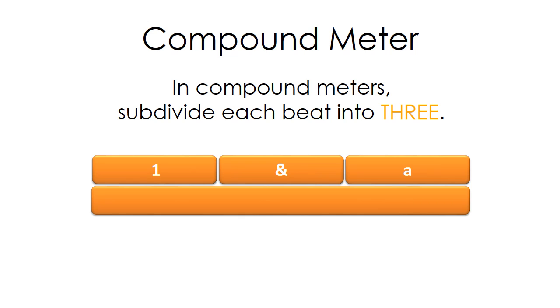When counting compound meters, subdivide each beat into three, saying one and a.